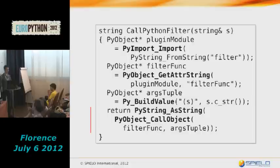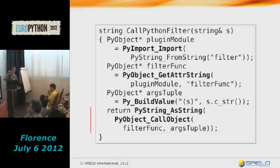What I'm not showing is any error checking — for example, what if the filter function doesn't return a string. Also, this code produces a memory leak because all allocated objects are never freed; their reference count remains one. At the end you would normally call the decrement reference counter macro on the module, the callable, and similar objects, but I'm not showing that here because it wouldn't fit on the slide.